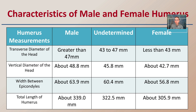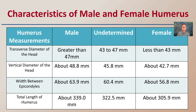Looking at the characteristics of the male and female humerus: the transverse diameter, vertical diameter, width between the epicondyles, and length of the humerus. This table gives us an idea of where measurements might fall and how they are classified. Keep in mind that some measurements fall in an undetermined range, which is why long bones are typically not the sole source used for determining the sex of an individual.